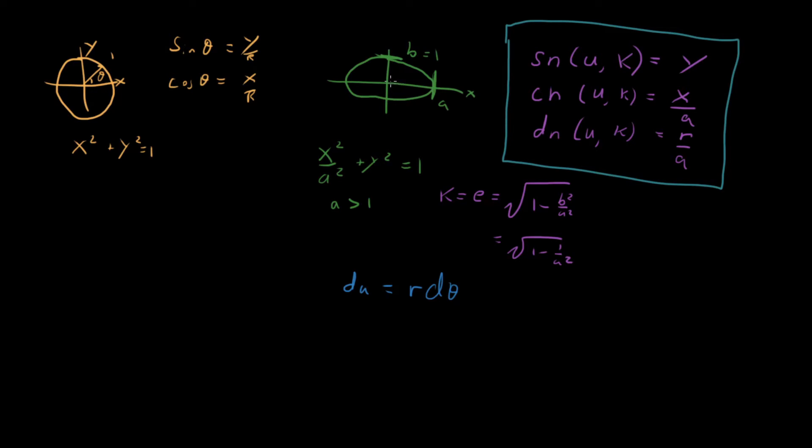Because if you're at this angle right here, r is going to be a different length than it is up here. And so because of that, this is going to be different from d theta.